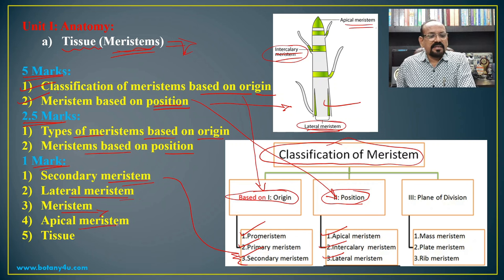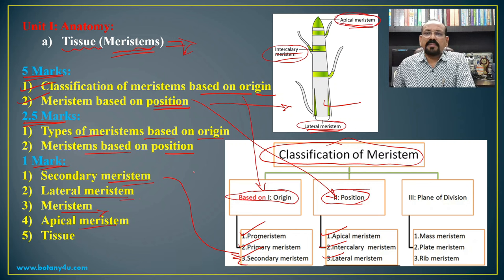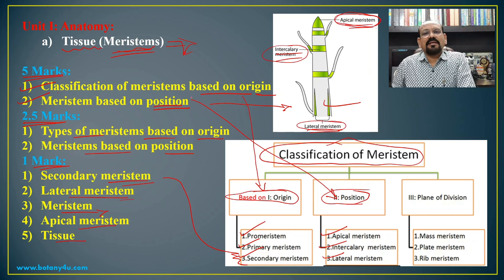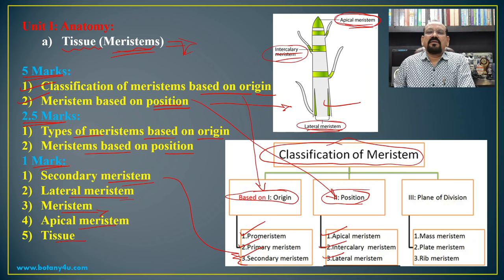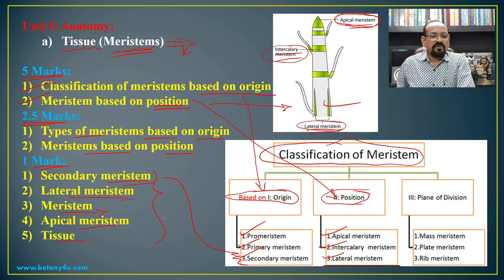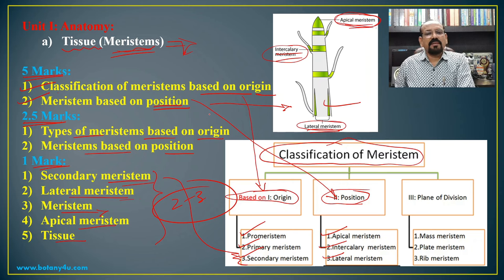Apical meristem is involved in increasing the length of the plant or branch. Tissue is defined as a group of cells having similar structure, similar function, and similar origin. In this way, we give two to three line answers for questions asked in Question 5 for 1 mark.